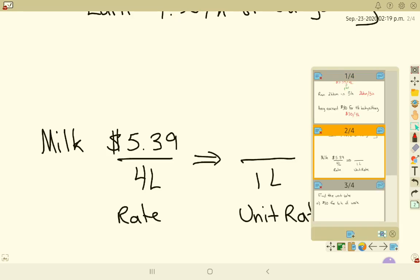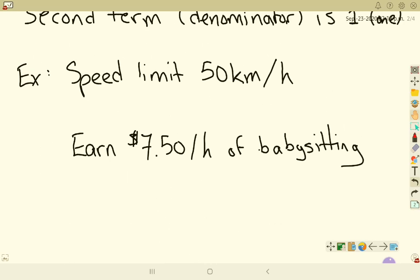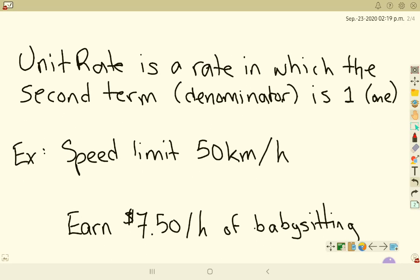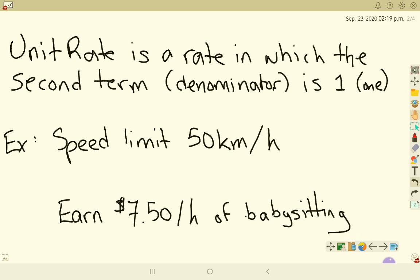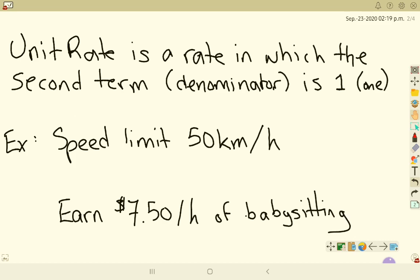Now a unit rate is a rate in which the second term, or if we're writing it as a fraction, the denominator, is 1. So a unit rate is a rate comparing two different things where the second term is 1. So it's per 1 of something.